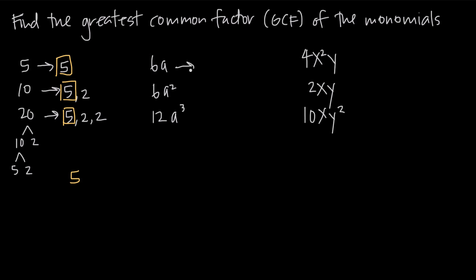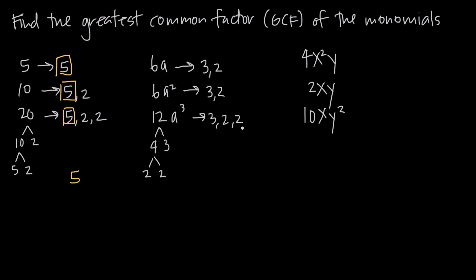If we break down 6 into its prime factors, the factors are going to be 3 and 2. If we break down 6 here into its prime factors, we're going to get 3 and 2. If we break down 12 into its prime factors, we'll get 4 and 3, and then break down 4 into 2 and 2, so we end up with 3, 2, and 2.